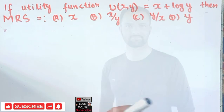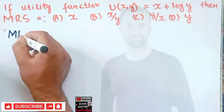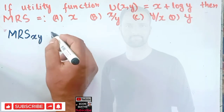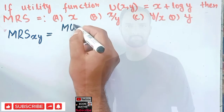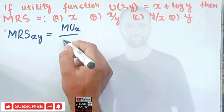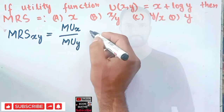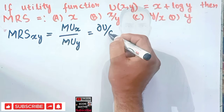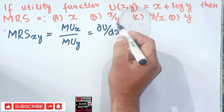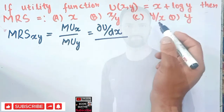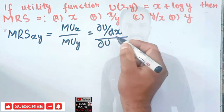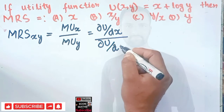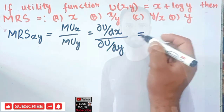First, we write the formula for marginal rate of substitution between two goods x and y. MRS is equal to the marginal utility of x over marginal utility of y, which can be written as the partial derivative of the utility function with respect to x, divided by the partial derivative of the utility function with respect to y.